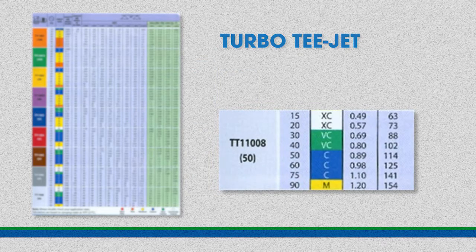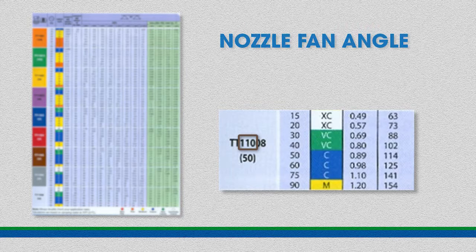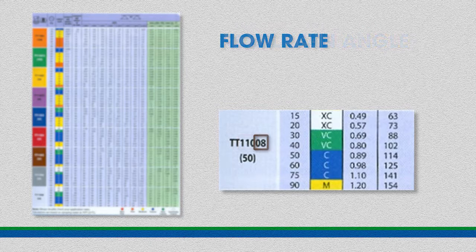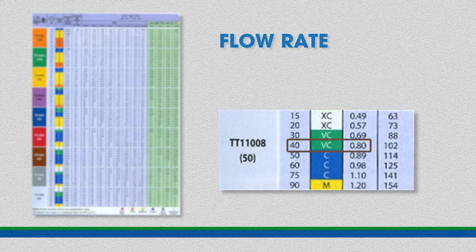Going down to TT 1108 at the last part of the page — again a Turbo T-Jet nozzle with a 110 degree fan angle. For '08', we put a decimal between the 0 and 8, giving 0.8 gallons per minute. This nozzle produces a flow rate of 0.8 gallons per minute when operated at 40 psi.